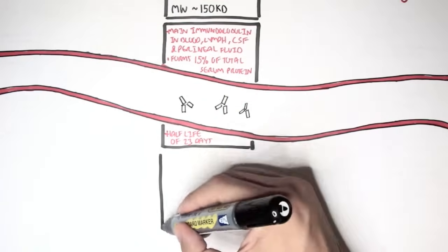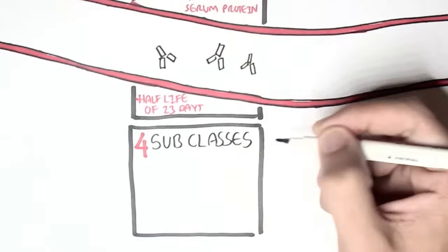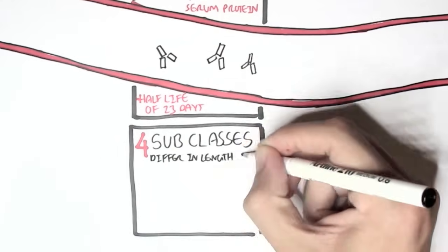Now what's interesting about IgG, because it is abundant, it has many subclasses, and they differ in the length of the constant region of the heavy chain.